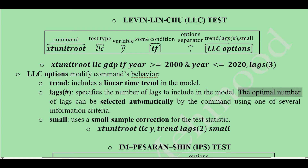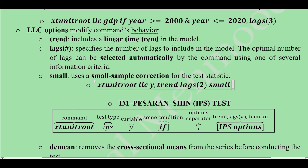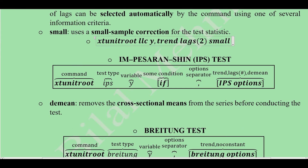Regarding LLC options: the trend option is used if the variable has a linear trend visible in its graph. The lags option has already been explained. For small datasets, we can apply a small-sample correction by including the 'small' keyword. For example, a command might include 'small', 'lags(2)', and 'trend', with the variable Y instead of GDP.